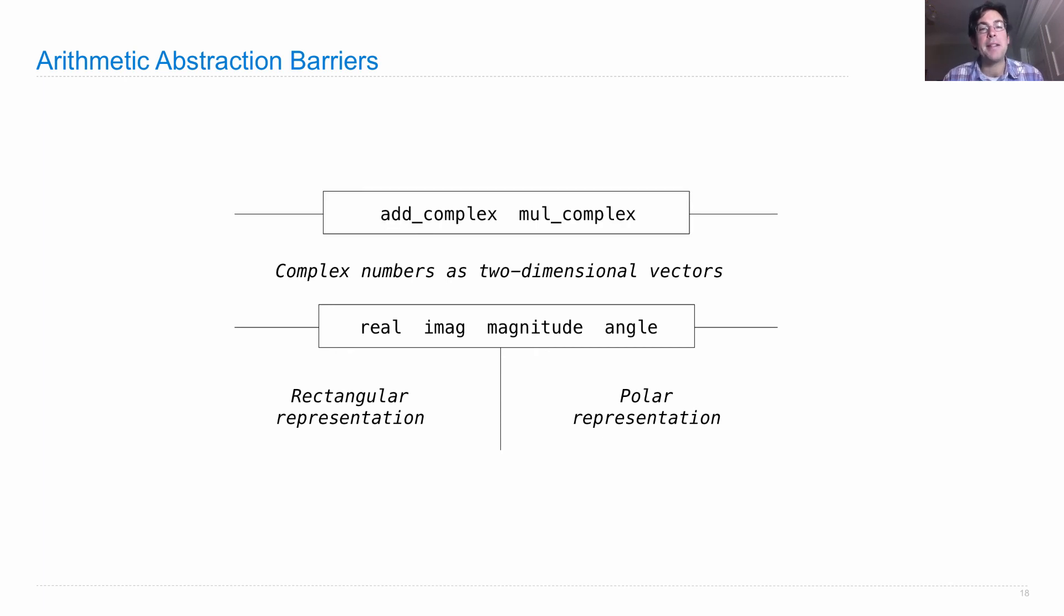And we implement, in terms of those two-dimensional vectors, two ways of combining complex numbers. We can add them together, and we can multiply them.